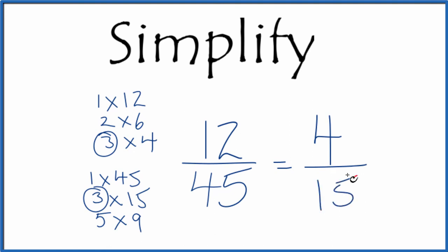So we've reduced 12 over 45 to four over 15, and you can't reduce this any further. These are equivalent fractions because if you divide 12 by 45 and four by 15, you get the same number. We've just simplified 12 over 45 down to four over 15.